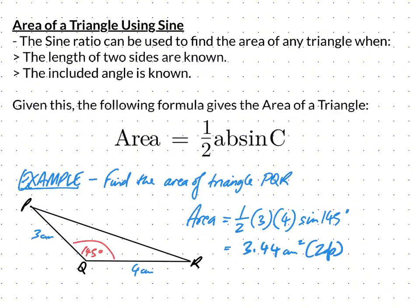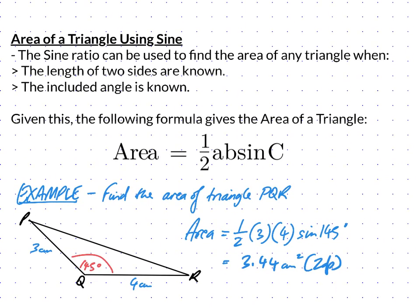So that's a very quick example of how to use the sine ratio in trigonometry to find the area of a triangle of any shape. Hopefully that video helps you out, and I'll see you in the next one.